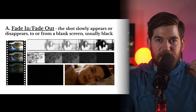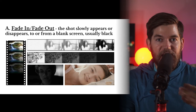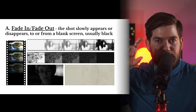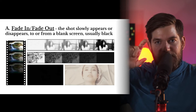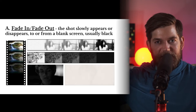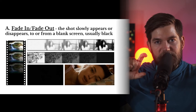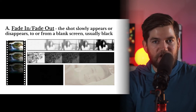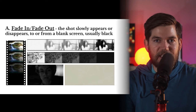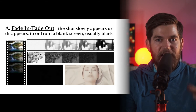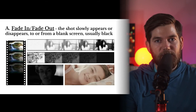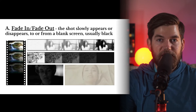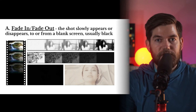That blank screen is usually black, but it could be any solid color, like white. In the first strip of frames, you can see that the shot fades in from white. In the second strip of frames, you can see that the shot fades out to black. In the first animation on the bottom left, you can see the shot fades out to black, and in the second animation on the bottom right, you can see the shot fades out to white. These are fade-in or fade-out transitions.